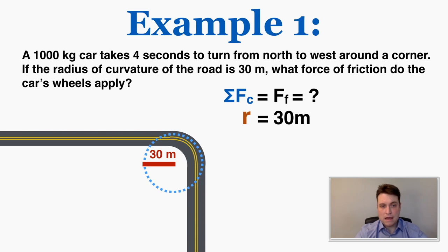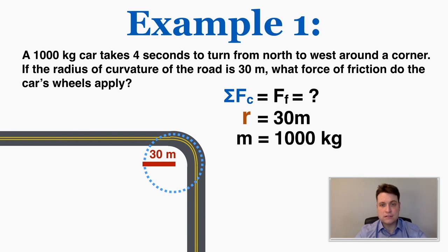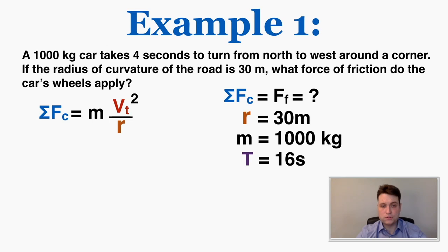The mass of the car is 1,000 kg. Because it takes four seconds to turn from north to west, that turn is one-quarter of the total circle. If one-quarter takes four seconds, the total circle takes 16 seconds — so the period of motion is 16 seconds. I have the radius, the mass, and the period, and I need to find the centripetal force, so I'll need to first solve for v_t using v_t = 2πr / T.